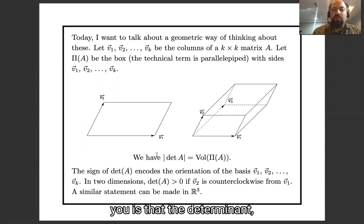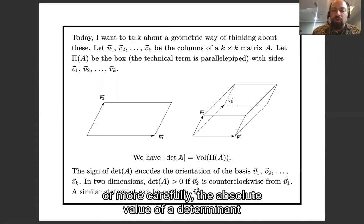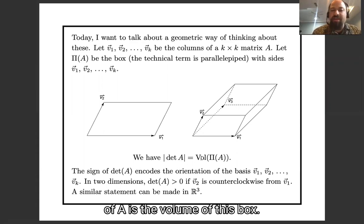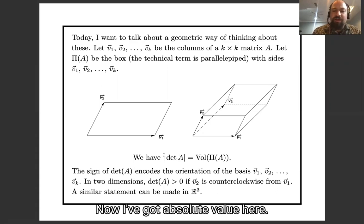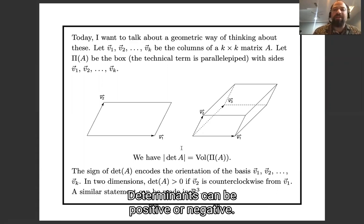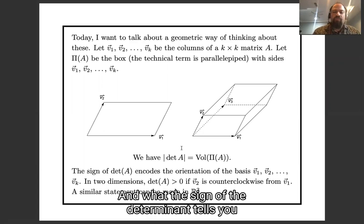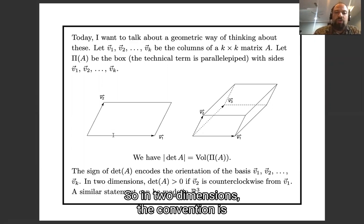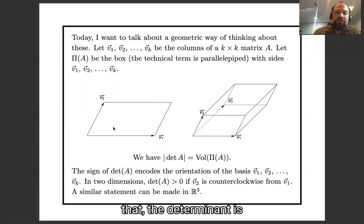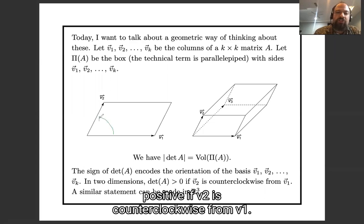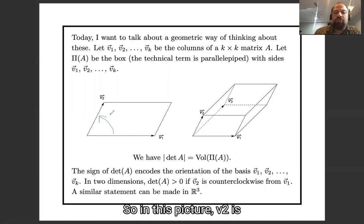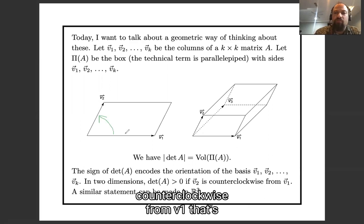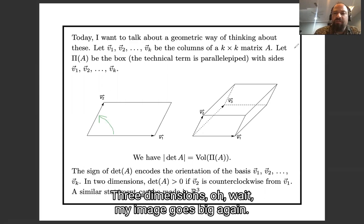The key fact is that the absolute value of the determinant of A is the volume of this box. Determinants can be positive or negative, and the sign tells you the orientation of the basis. In two dimensions, the convention is that the determinant is positive if v2 is counterclockwise from v1.